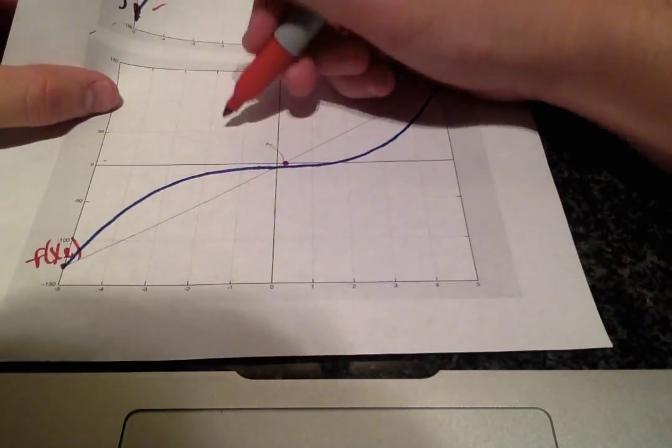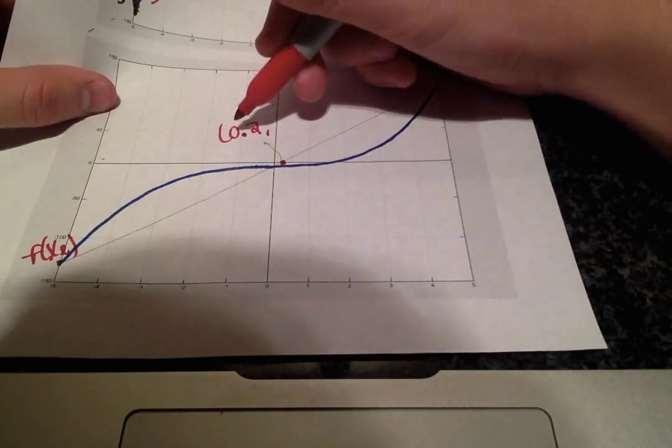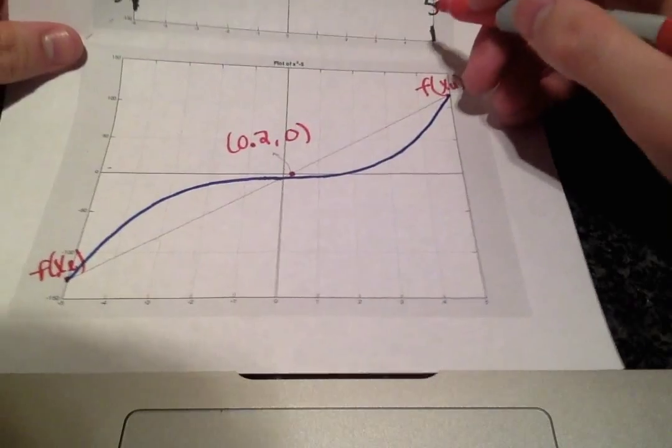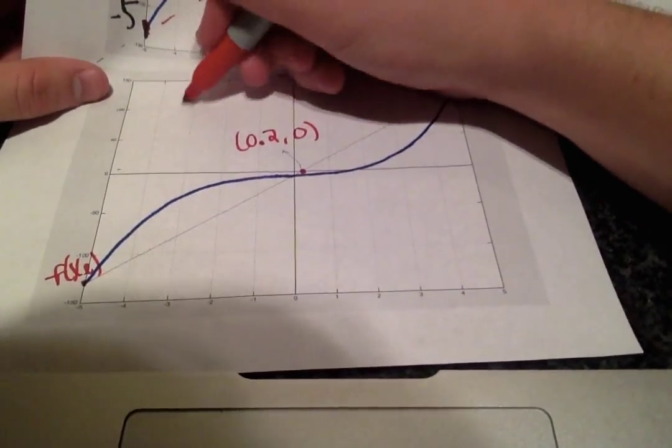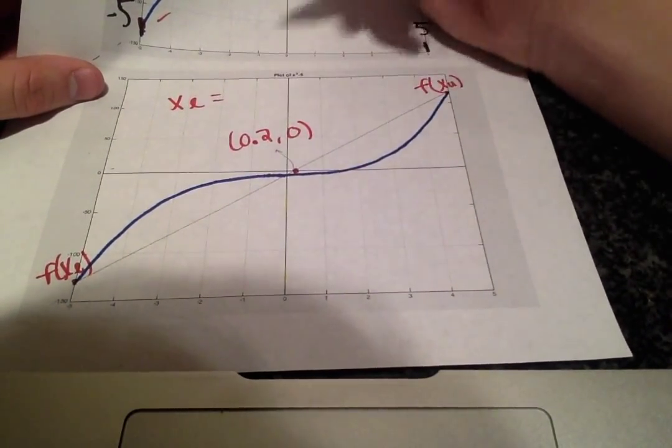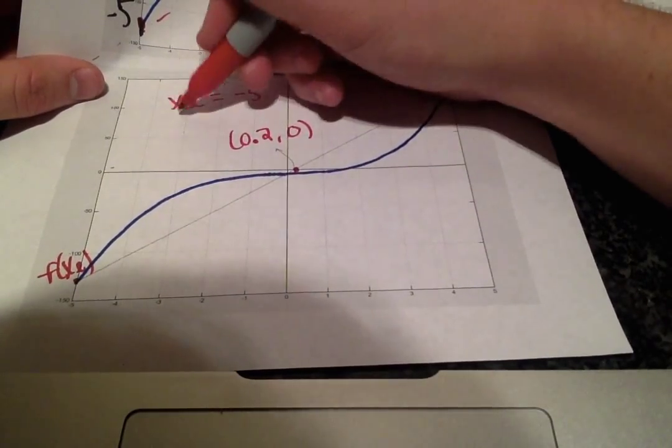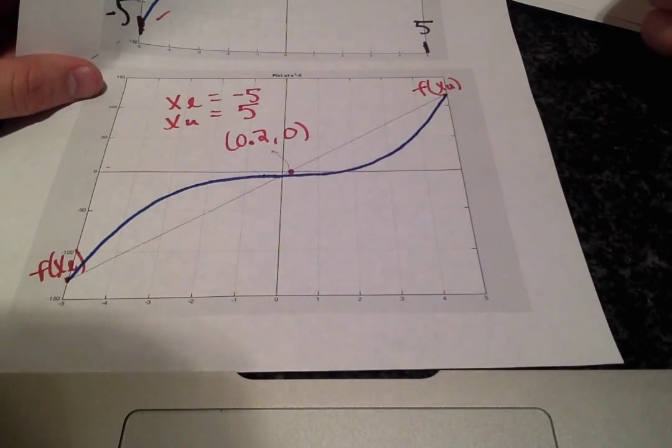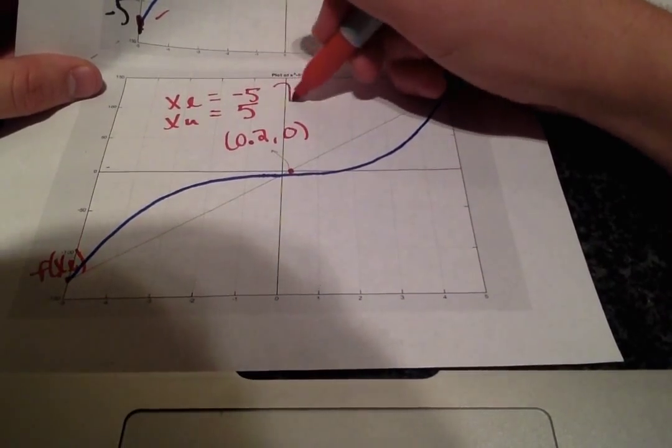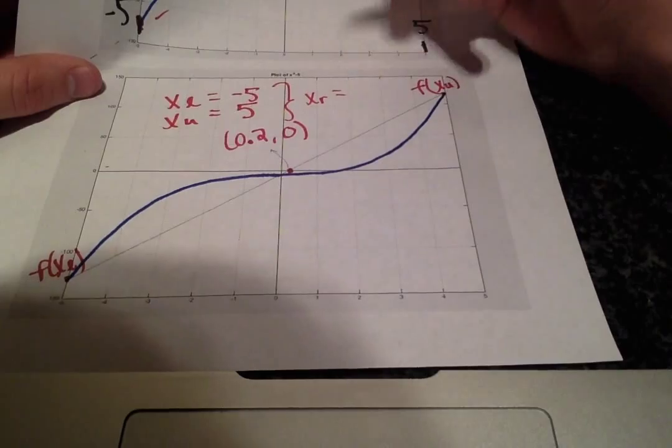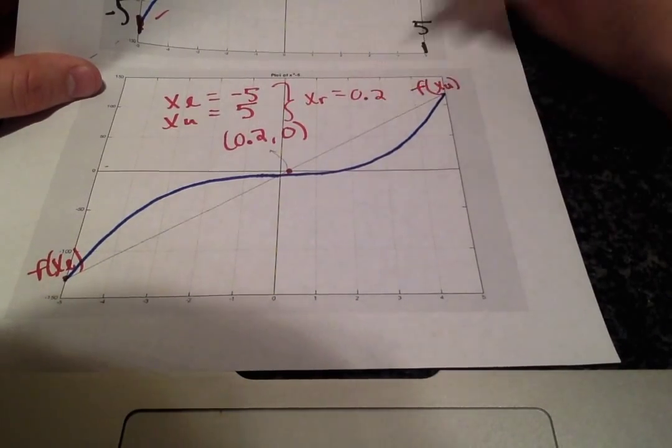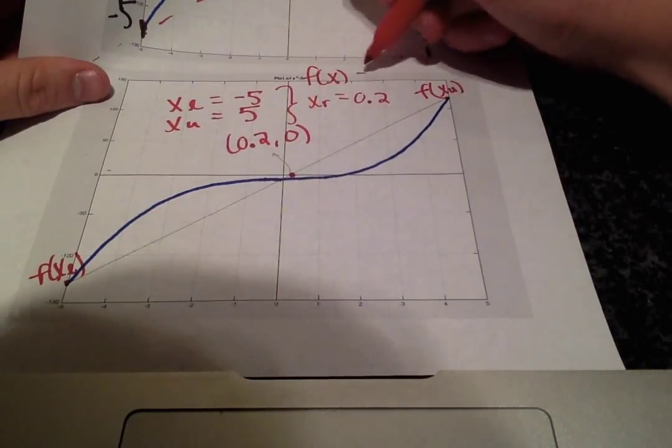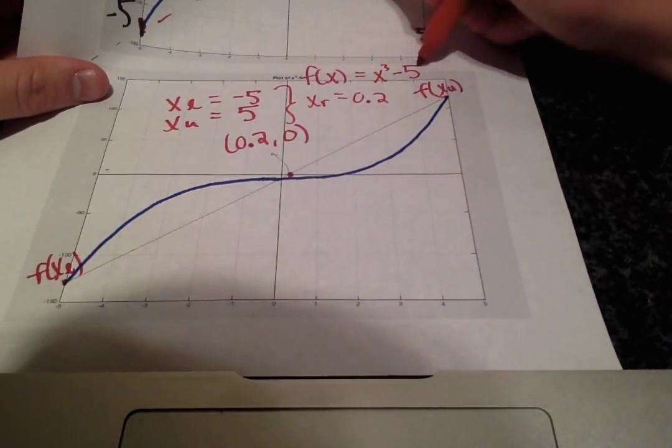And that's 0.20, and you can check for yourself using the lower limit, negative 5, and the upper limit of 5, and calculating your x_r value, you will get 0.2 for the equation f of x equals x cubed minus 5.